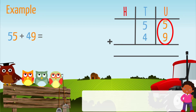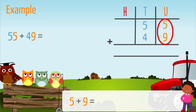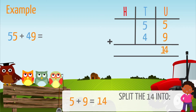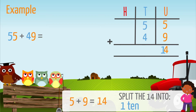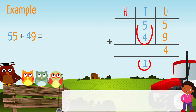Add the units: five plus nine equals 14. Split the answer 14 into one ten and four units. We will then write four in the units column and one under the equal sign in the tens column. Add the tens: five plus four plus one carried over.